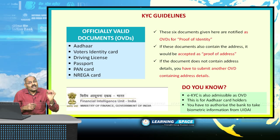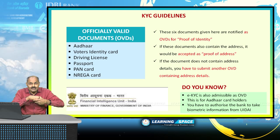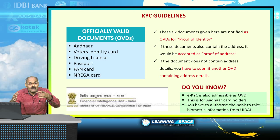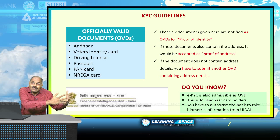Another important aspect is that eKYC is also eligible. eKYC means your entire data is available with the Unique Identification Authority of India which issued your Aadhar Card. You can ask the bank to take your data electronically from the UIDAI website. You have to go to the bank and give a mandate to the bank to access your information from the UIDAI website.